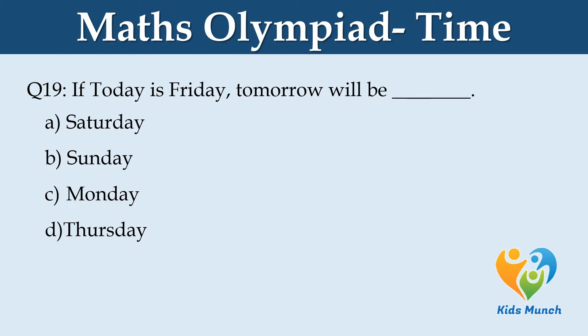If today is Friday, tomorrow will be dash. Option A: Saturday. Option B: Sunday. Option C: Monday. Option D: Tuesday.